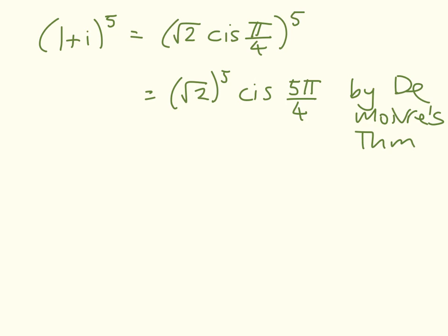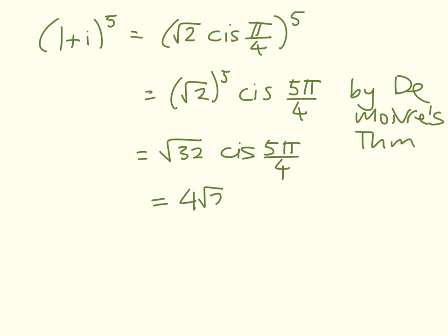Now we just work that out. This is the square root of 32, cis 5 pi on 4, which is 4 root 2 cis 5 pi on 4.